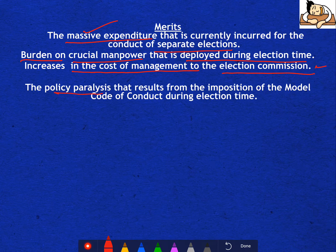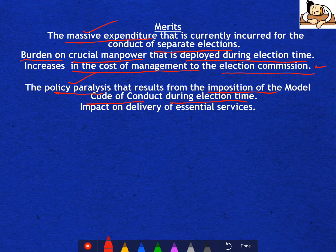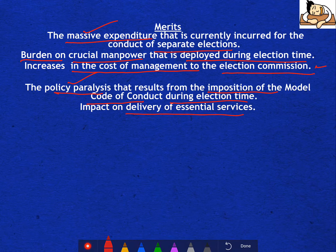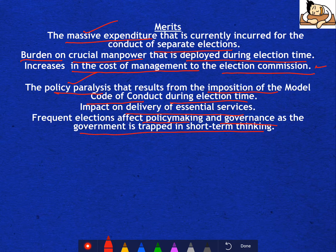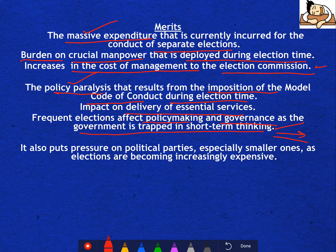The policy paralysis that results from imposition of the Model Code of Conduct during election time is a major issue. Because frequent elections happen, the Model Code of Conduct must be imposed, and the policy paralysis caused by it causes a lot of harm to the common public. It also affects delivery of essential services, and impacts policy making and governance as the government is strapped in short-term thinking.